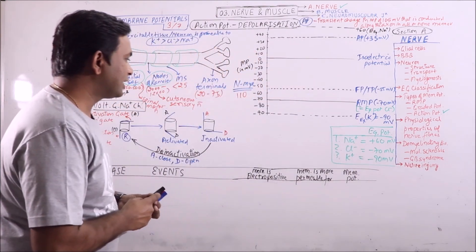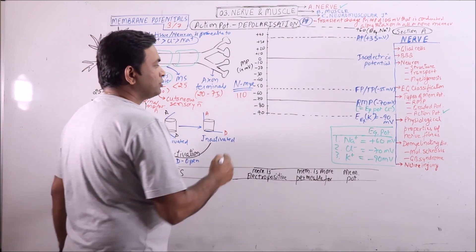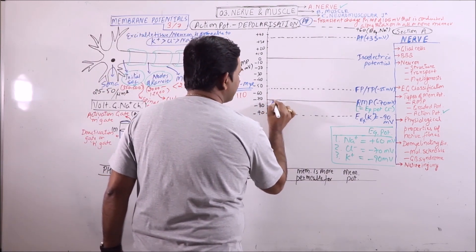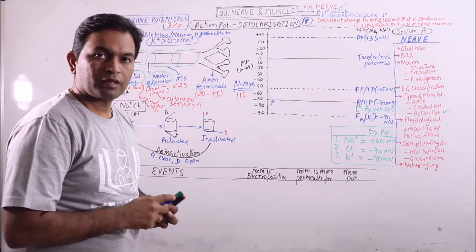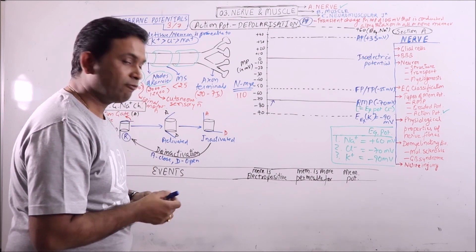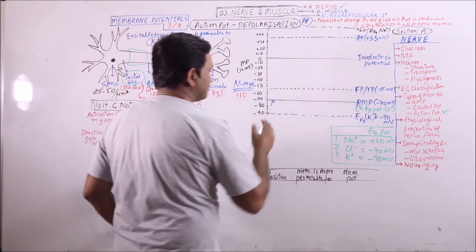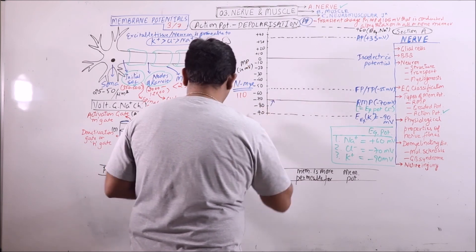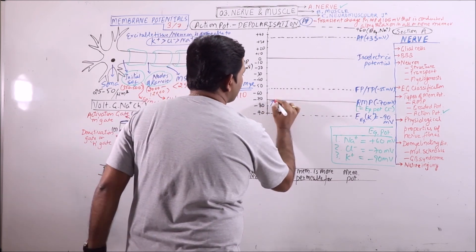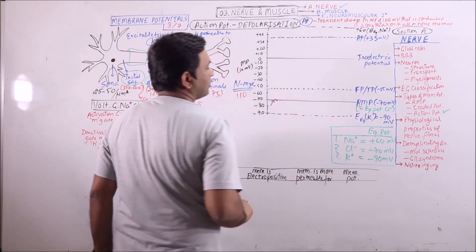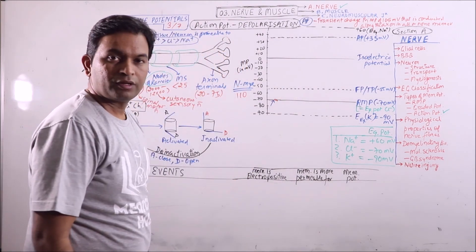Now, if we give a stimulus, what will happen? If we give the stimulus, then a minute change or fluctuation in the membrane potential can be observed. This is known as the stimulus artifact. A stimulus artifact is because of leakage of minimum current from the stimulation electrode to the measuring electrode.